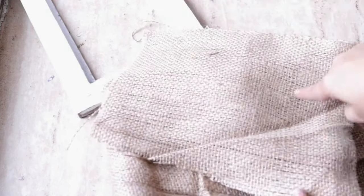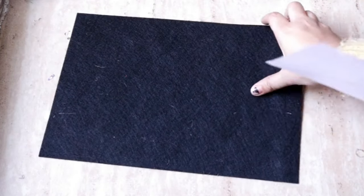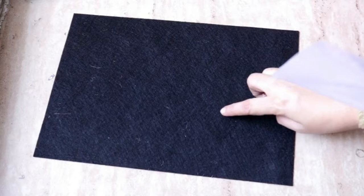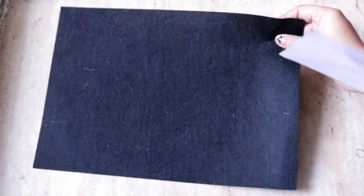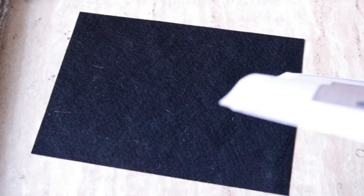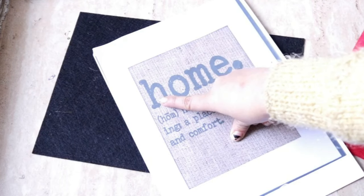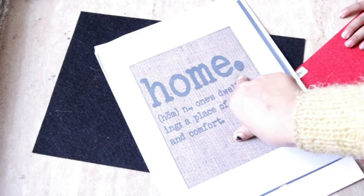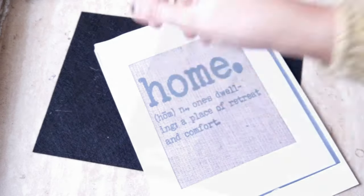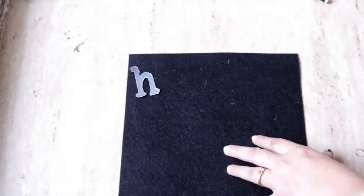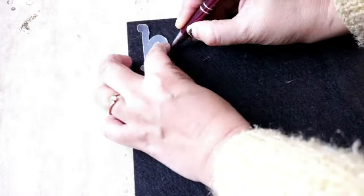Now I am going to use this felt sheet for cutting out some letters. This felt sheet was bought from Itsy Bitsy. You can buy it from any local stationery shop. I have taken a printout. I want the alphabets to be in this style. Basically, I am going to trace these alphabets on the felt sheet and then I will simply cut them out.